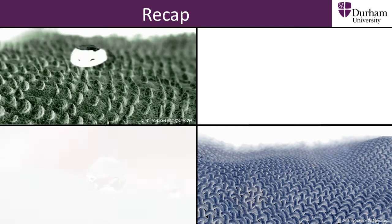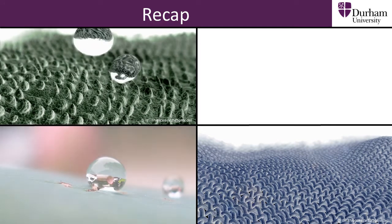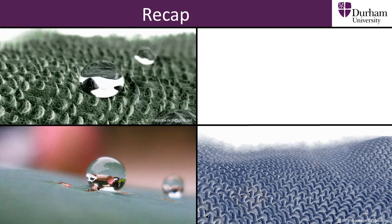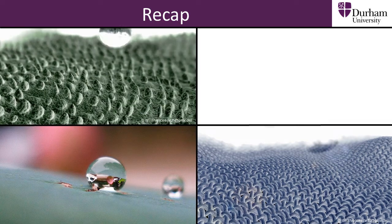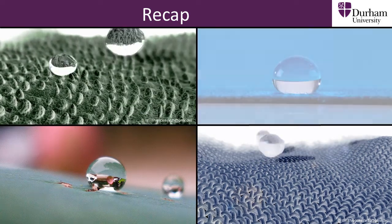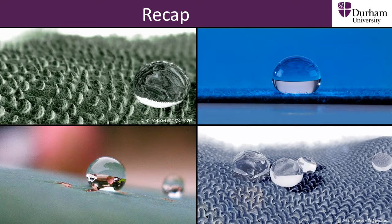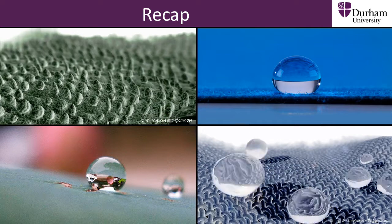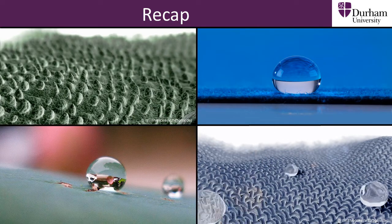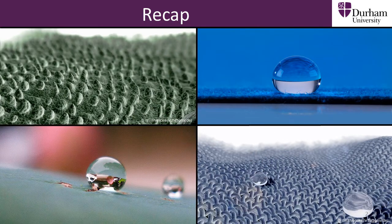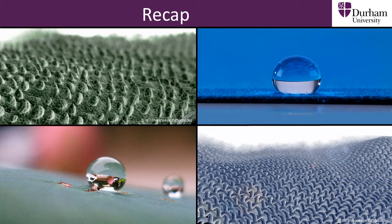In the previous part of this section we looked at how biomimetics can be used to copy the surfaces found in nature and imitate their special properties. In this part we will look at some more examples and look in more detail at how we make and use biomimetic surfaces.